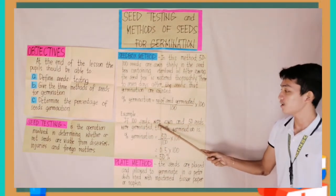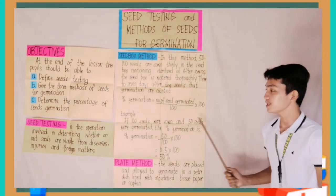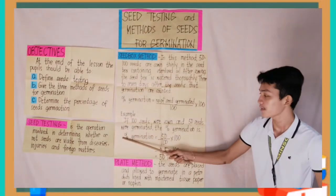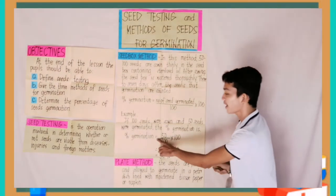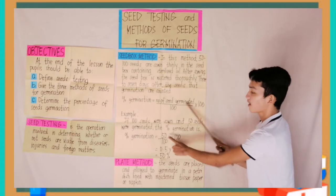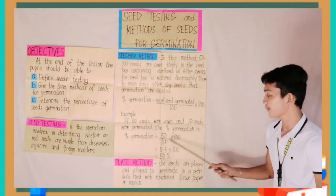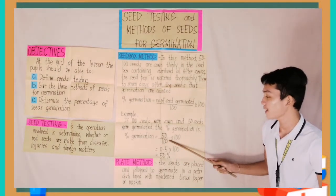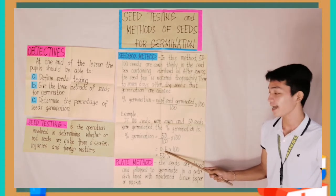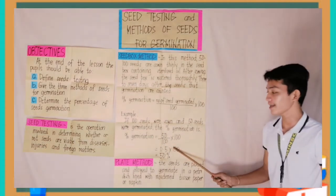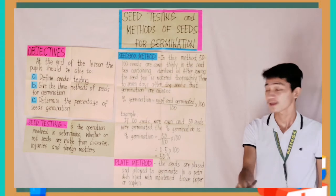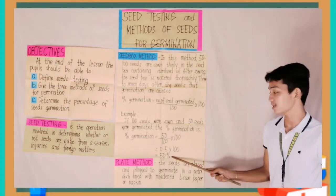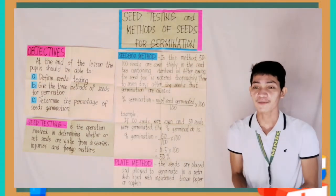For example: if 100 seeds were sown and 50 seeds germinated, the percentage germination is equal to — number of seeds germinated: 50, divided by 100, equals 0.5, then 0.5 times 100 equals 50 percent. Did you understand class? Okay, very good.